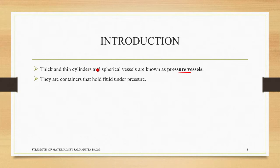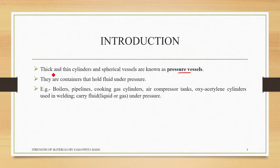Some examples of pressure vessels are boilers — we are well versed with steam boilers — and mechanical pipelines which carry gases to homes, including biogas. There are also cooking gas (LPG) cylinders available in the market, air compressor tanks where air is compressed and then supplied for other applications.